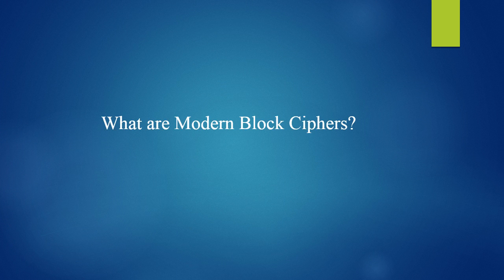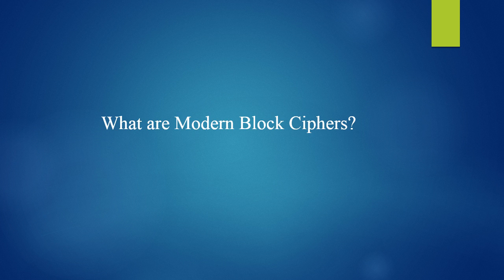Hello friends, today we are going to discuss what are modern block ciphers. Let us first recall a few basic terms. Block ciphers are ciphers in which characters are not encrypted one by one; instead, we encrypt block by block of plaintext into ciphertext. Modern ciphers focus on the encryption of bits rather than characters. Symmetric key ciphers use the same encryption and decryption key, and the encryption and decryption algorithms are inverses of each other.